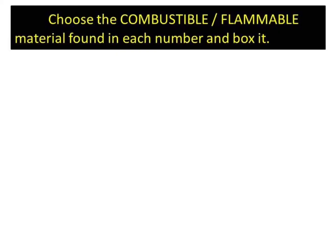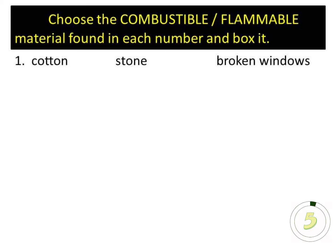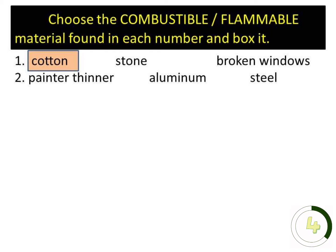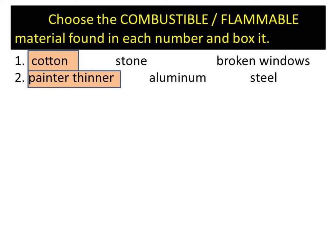Activity 1: Choose the combustible or flammable material found in each number and box it. Number 1: Cotton, stone, broken windows. Answer: Cotton. Number 2: Painter's thinner, aluminum, steel. Answer: Painter's thinner.